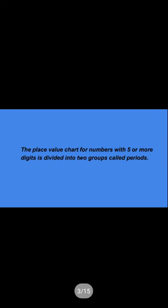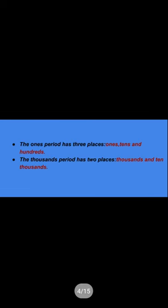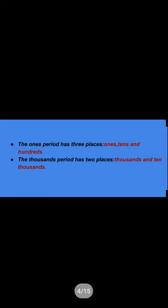The place value chart for numbers with 5 or more digits is divided into 2 groups called periods. The 1s period has 3 places — that is 1s, 10s, and 100s. The 1000s period has 2 places — that is 1000s and 10,000s.